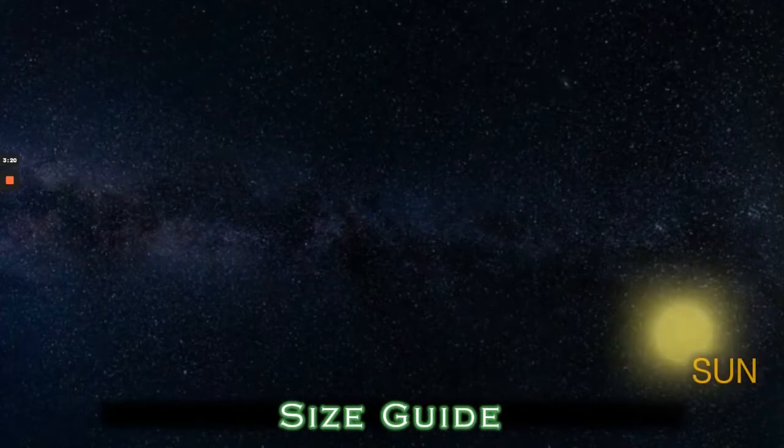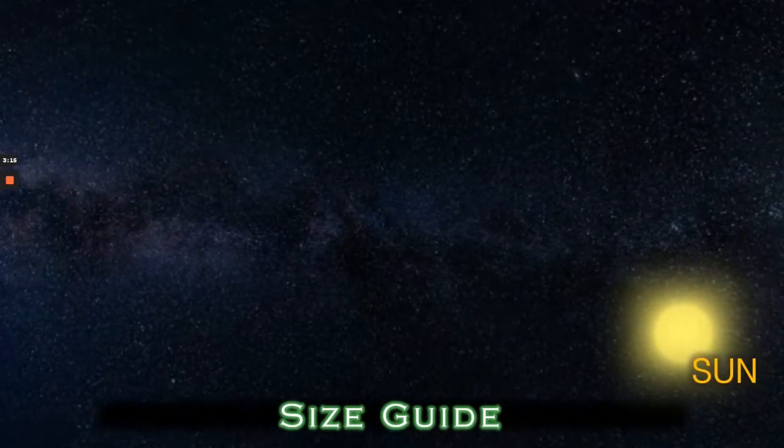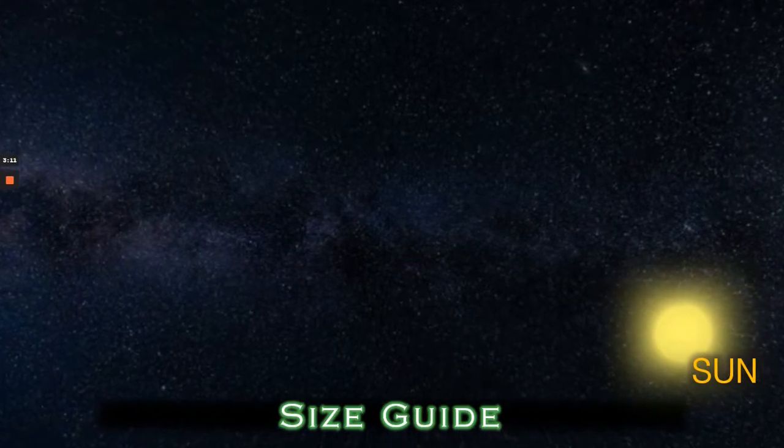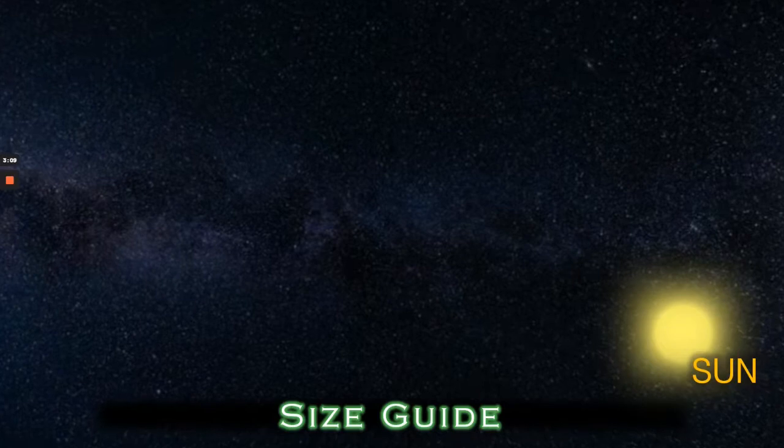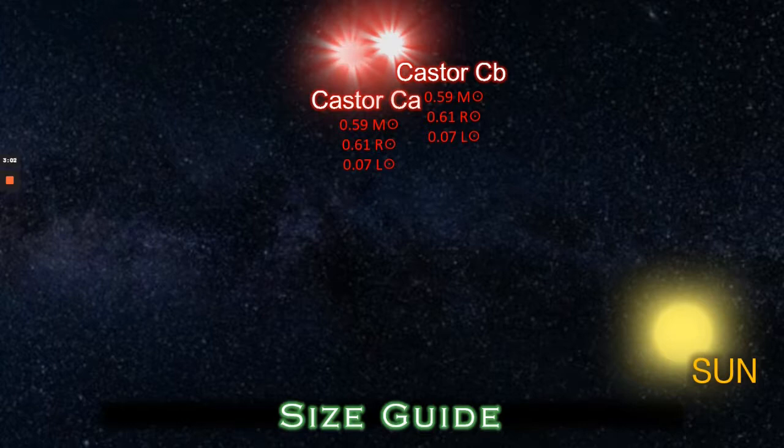So what about the sizes of the stars you might wonder? Well here's our Sun as we can see in the bottom right hand corner. The first thing to know is that the Castor star system is not actually a star at all, but it's a system of six. The first two stars are small red dwarfs, Castor CA and Castor CB, a binary pairing.